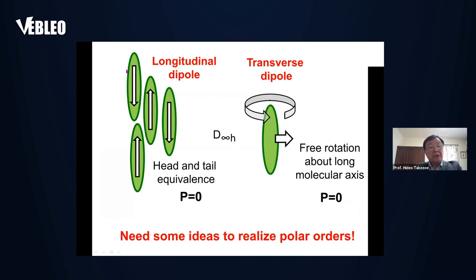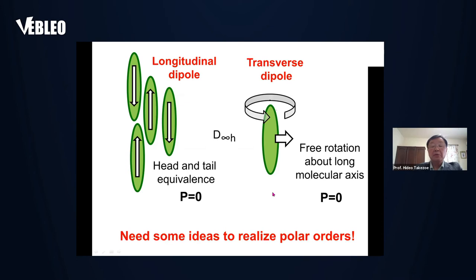Suppose we have a rod-like molecule which has a longitudinal or transverse dipole. In the nematic phase, head-tail equivalence exists, so the polarization cancels and there is no net polarization. Also, we have free rotation about the long molecular axis, so the polarization is cancelled out again. So we need some ideas to realize polar orders.